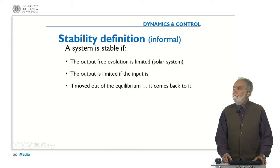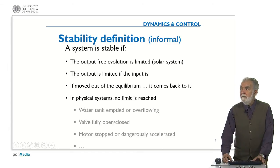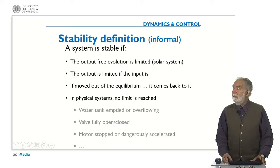We can also say that if we are in an equilibrium, the equilibrium is stable if moved out of the equilibrium, the system comes back to it. In physical systems we will say also that a system is stable if we don't reach the limits. For instance, if we are dealing with the level of a water tank, it will be stable as far as the tank is not emptied or overflowing. If we are controlling a valve, it will be stable if it's not fully open or fully closed. The same with a motor if it's not stopped or dangerously accelerated. So this is an informal definition of stability.